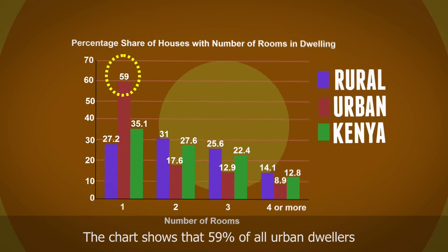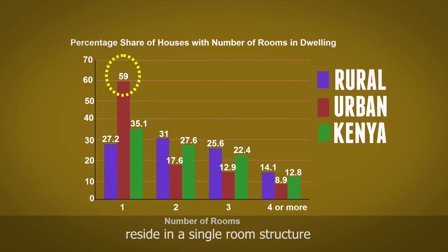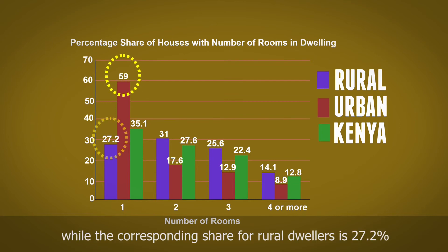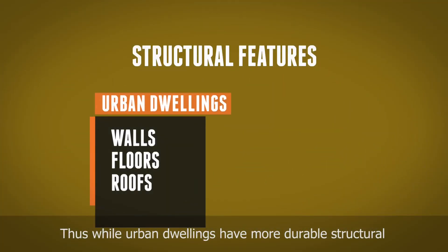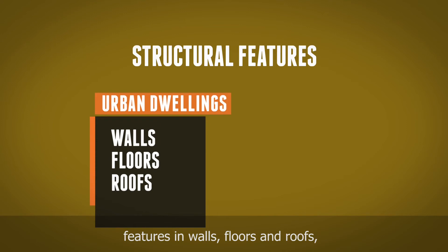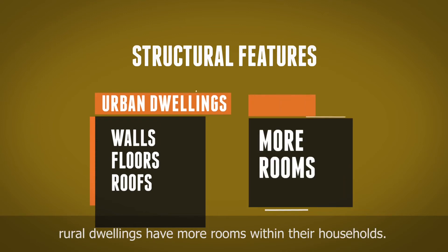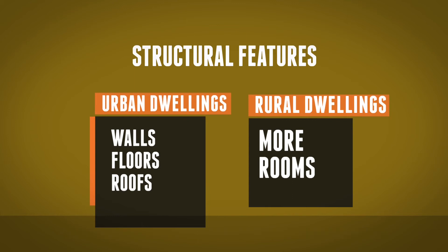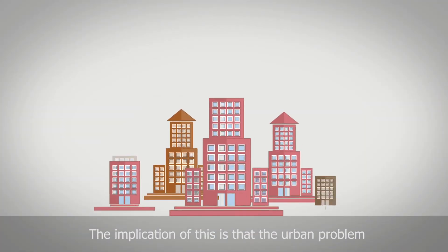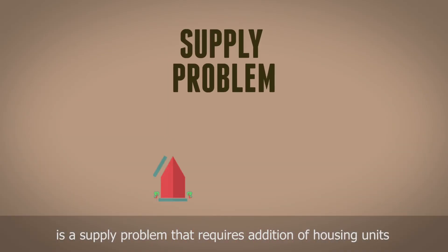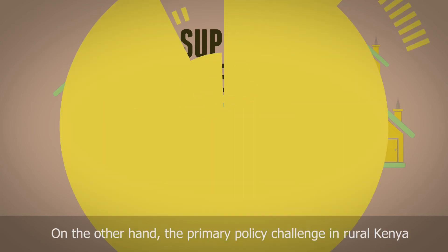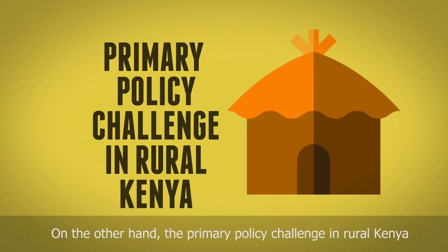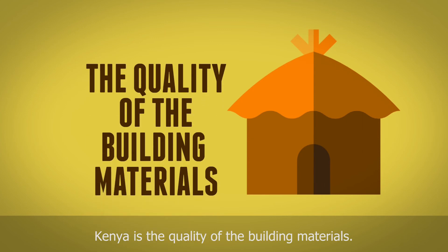The chart shows that 59% of all urban dwellers reside in a single room structure, while the corresponding share for rural dwellers is 27.2%. Thus, while urban dwellers have more durable structural features in walls, floors and roofs, rural dwellers have more rooms within their households. The implication is that the urban problem is a supply problem that requires addition of housing units for rental and purchase, while the primary policy challenge in rural Kenya is the quality of the building materials.